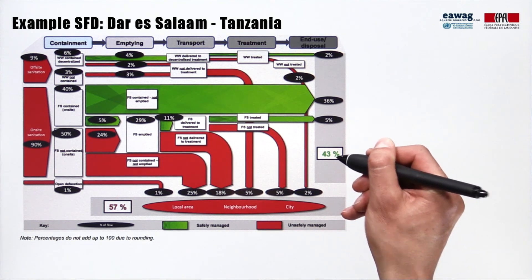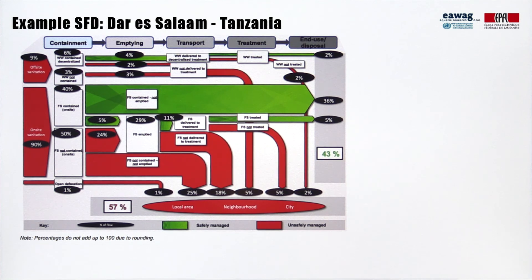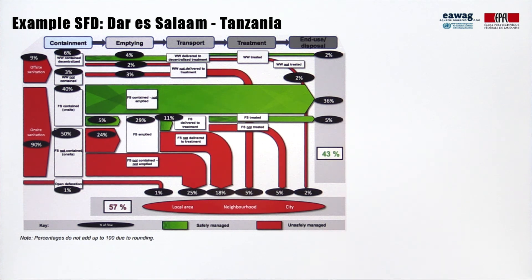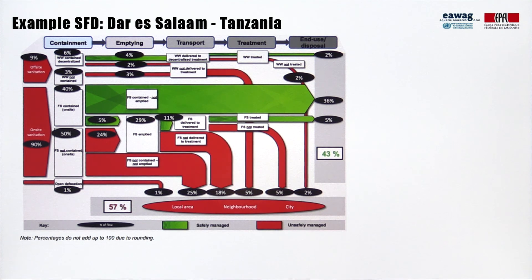Of the 43% safely managed excreta, a major contribution is fecal sludge contained and not emptied. SFDs represent the current situation. At the time this one was made, many pit latrines were built quite recently and simply not yet full. Once these pit latrines need to get emptied, treatment infrastructure needs to be available so that emptying service providers have an appropriate location for discharge. If not, the percentage of unsafely managed excreta would increase significantly.